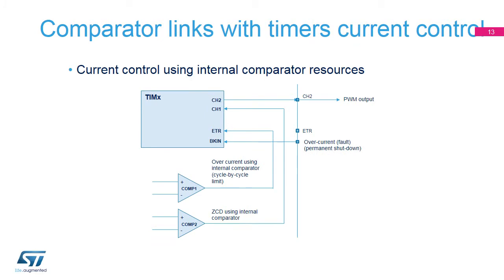The figure represents an example of direct connection between timer and comparator units. Overcurrent limitation uses the ETR input and external reset uses the CH1 input.